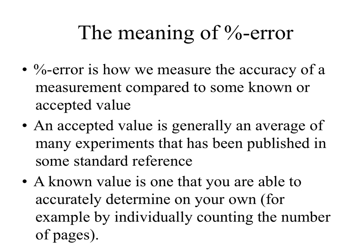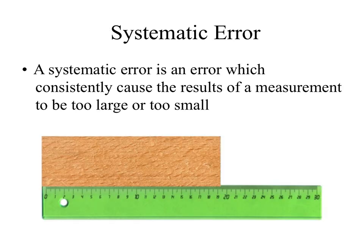When making a measurement, errors are the things that prevent you from exactly determining the true value of what you're measuring. There are different kinds of errors. One of the most important is what's called a systematic error — an error which consistently causes the results of a measurement to be too large or too small.